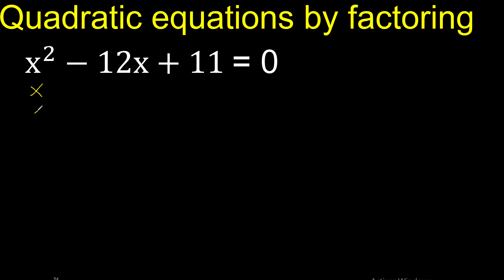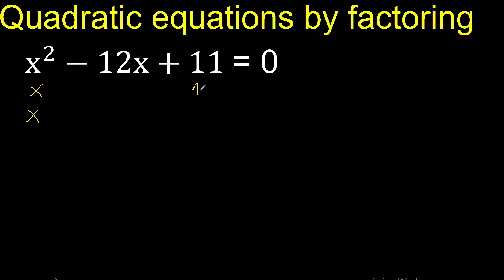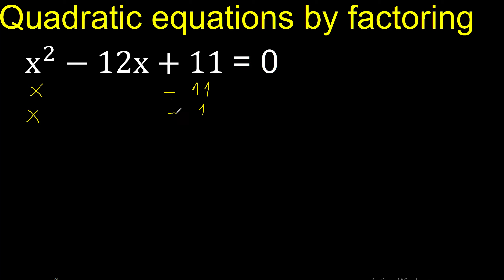X multiplied by X is X squared. 11 — two numbers that multiply to give 11: 11 multiplied by 1 is 11. Plus plus is plus, or minus minus is plus.